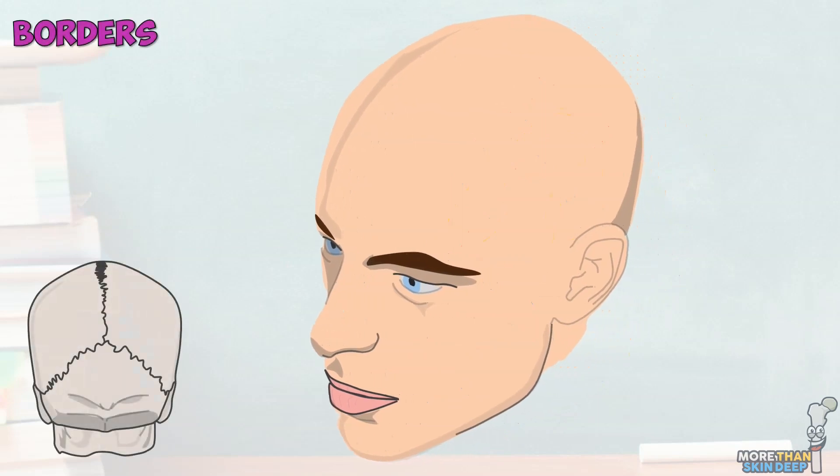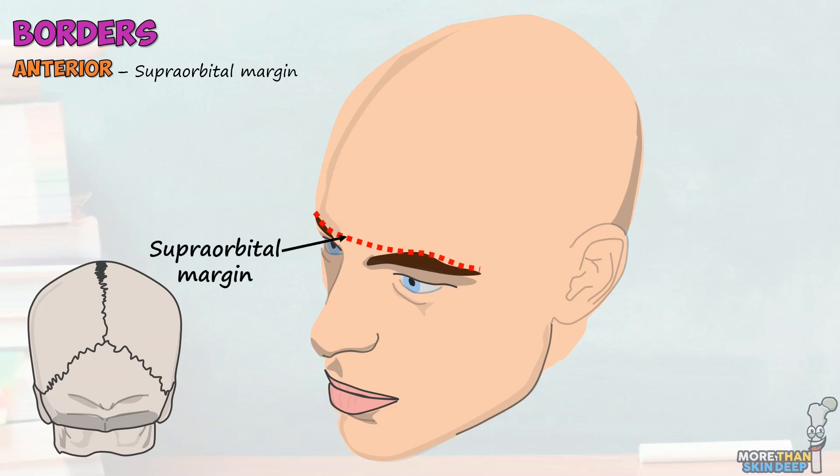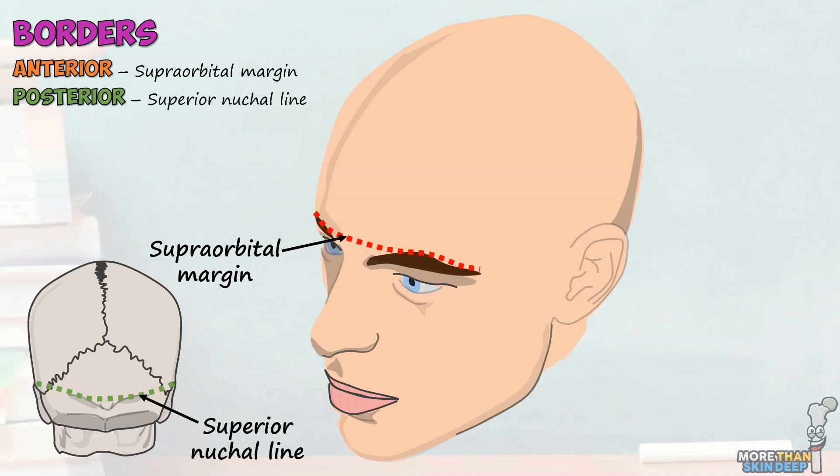There's no great consensus on how the surface anatomy of the scalp should be defined, with bespoke systems existing for hair transplant surgeons, radiologists, neurosurgeons and the like. However, what is usually agreed upon are the anterior, posterior and lateral borders of the scalp. The most anterior border is the supraorbital margin, where the frontalis muscle inserts into the orbicularis oculi and the skin over the eyebrow. Posteriorly, it's defined by the two occipitalis muscles' insertion into the superior nuchal line. And laterally, it extends down to the zygomatic arch.